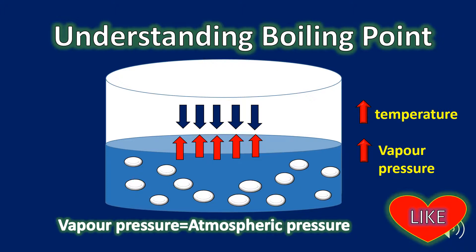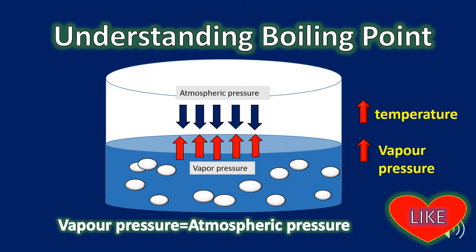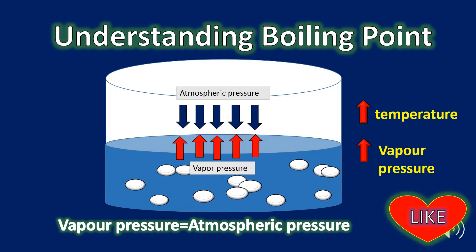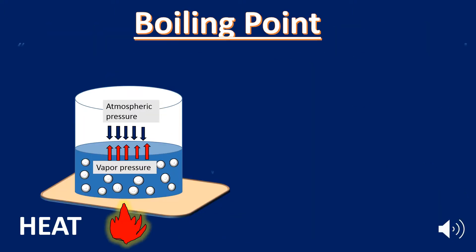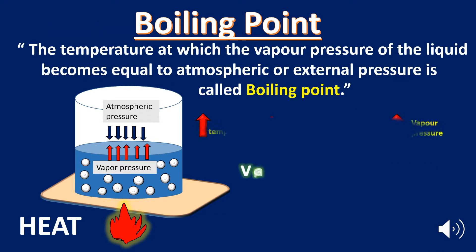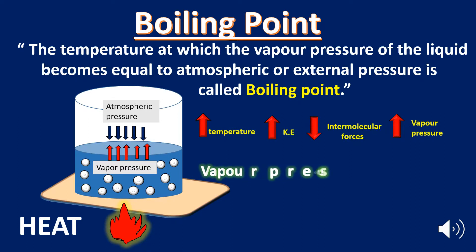Consider a liquid in an open container. With the increase in temperature, vapor pressure increases and ultimately reaches the atmospheric pressure or external pressure. At this stage, boiling starts. Remember that at boiling, temperature remains constant although heat is continuously supplied. By definition, boiling point is the temperature at which the vapor pressure of the liquid becomes equal to the atmospheric pressure or the external pressure.